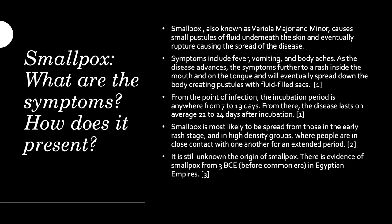Smallpox is known as variola major and variola minor — two different strains, which we will talk about a little later. Both of these strains cause small pustules of fluid underneath the skin with a scab layer over top, and can eventually rupture, causing the spread of the disease not only from yourself onto further parts of your body, such as your arms, your legs, the trunk, your torso, and even into your mucous membranes, such as your esophagus or lungs.